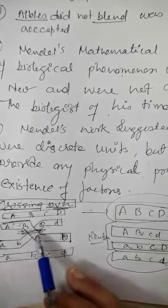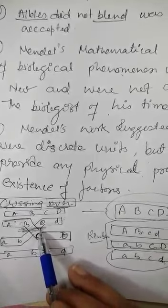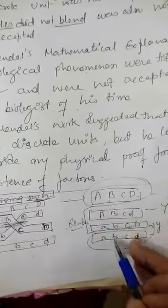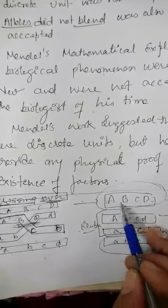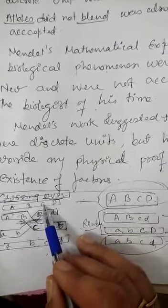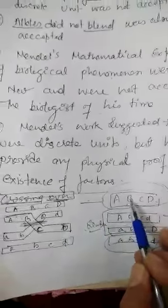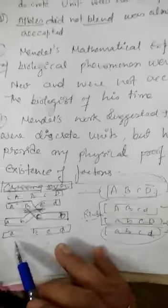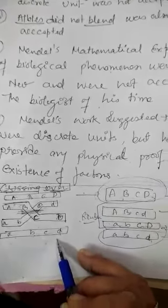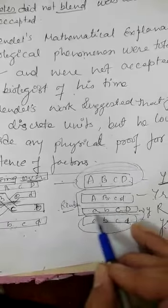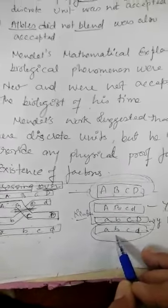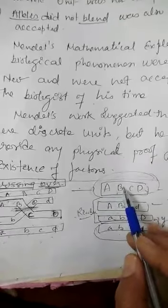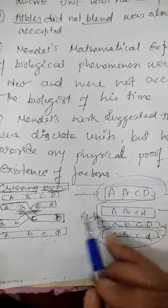After the terminalization of the chiasma takes place, the result of crossing over will occur. Look at here — this is A B C D. This chromosome or chromatid is non-crossover, so it will remain as it is and will be there in one of the gametes. Then this a b c d is also non-crossover and will be there in another gamete — both in the parental combination.